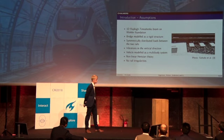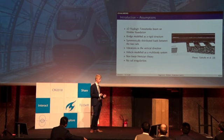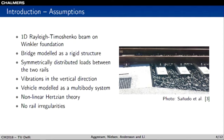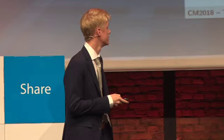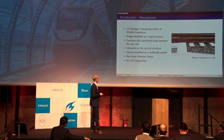As to the assumptions within the model: all parts explicitly modeled with finite elements are modeled as one-dimensional rail Timoshenko beam elements. The foundation is modeled as a Winkler foundation, whereas the bridge is assumed to be significantly stiffer than the embankment and is therefore modeled as a rigid structure. We assume symmetrically distributed loads between the two rails, which allows us to apply a symmetry condition and consider only one rail and half of the panel and sleepers. We consider vibration in the vertical direction only. The vehicle is modeled as a multi-body system, and for the wheel-rail contact we use a non-linear Hertzian contact theory, which allows for loss of contact. Rail irregularities are not considered in the optimization procedure.